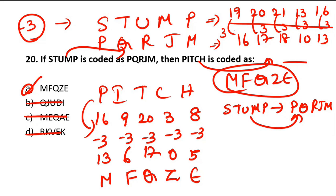In alphabetical order: backward one place is minus 1, two places is minus 2, three places is minus 3. Forward one place is plus 1, two is plus 2, three is plus 3. STUMP is coded as PQRJM — from STUMP to PQRJM it is minus 3. If you try plus 3 for PITCH, the option doesn't exist either, confirming the answer is MFQZE, Option A.